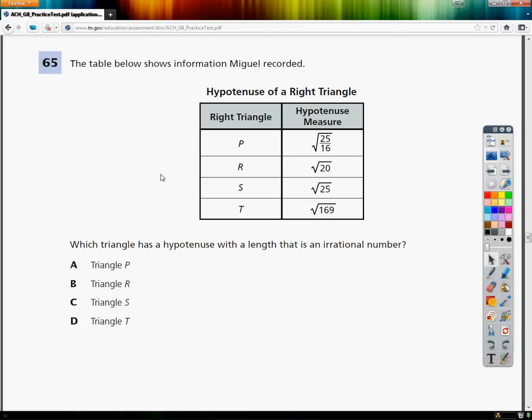It talks about the hypotenuse of right triangles. His first right triangle has a hypotenuse of the square root of 25 over 16. The R is the square root of 20, the S is the square root of 25, and T is the square root of 169.